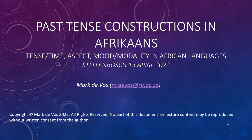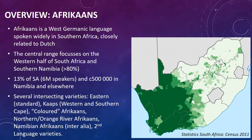Before we talk about past tense constructions in Afrikaans, let's overview some of the basics. Afrikaans is a West Germanic language spoken widely in Southern Africa, and it is closely related to Dutch, although it has influences from many, many languages. The central range of Afrikaans focuses on the western half of South Africa and Southern Namibia, and in this area more than 80% of people speak Afrikaans as their first language. It is South Africa's third largest language, with about 13% of South Africans speaking it as their home language, which amounts to about 6 million people.